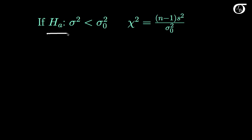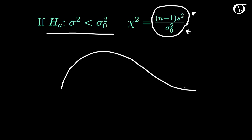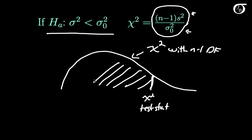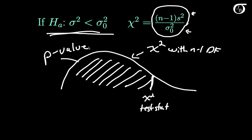On the flip side, if our alternative hypothesis is that sigma squared is less than the hypothesized value, then S squared will typically be less than sigma-naught squared, and the chi-square test statistic will tend to be small. Drawing out the chi-square distribution with n-1 degrees of freedom, small values of the test statistic give us evidence against the null hypothesis, so the p-value is the probability of getting this number or something even smaller — the area to the left of the calculated test statistic. If using the rejection region approach, we choose a rejection region in the left tail.